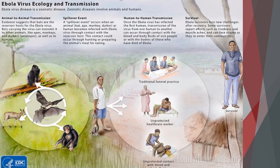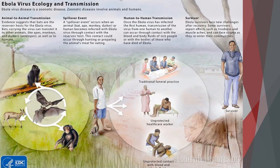I like this illustration a lot better — it's a little simpler. The bats interact with the animals. The hunter has killed one of the animals for food and goes to butcher it. But if it's an infected animal, he can become ill. That's considered a spillover event. Then human-to-human transmission occurs when someone taking care of the ill person comes in contact with their blood and body fluids, or if you have an unprotected health care worker. Finally, some of the traditional funeral practices there result in exposure as well.